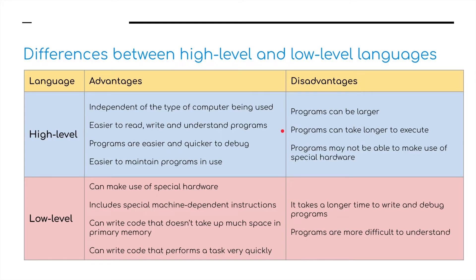So what are the advantages and disadvantages? For a high-level language, it is independent of the type of computer being used — it can be written on a Mac, a Windows machine, or anything. It's easy to read, write, and understand. Programs are easier and quicker to debug, and easier to maintain. The disadvantage, however, is that programs can be larger and can take longer to execute, and programs may not be able to make use of special hardware.